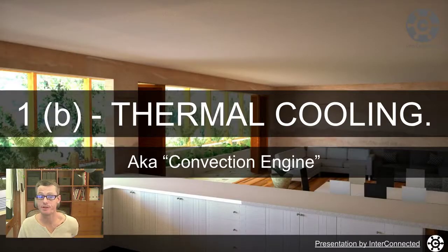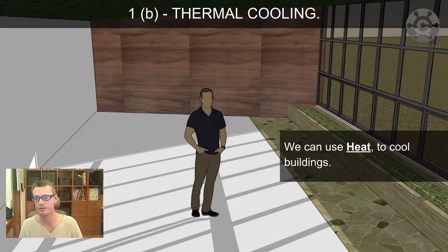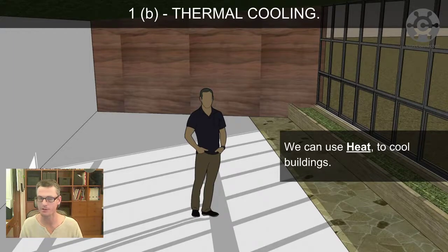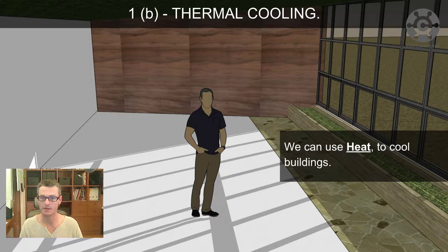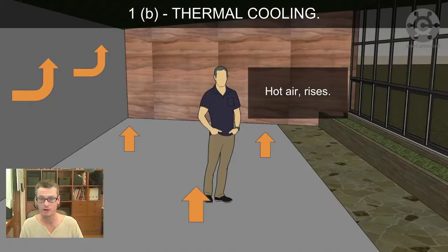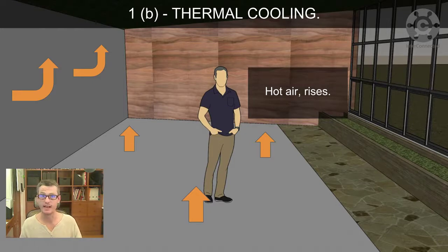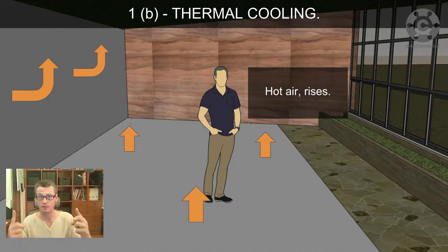And this is thermal cooling, so also known as a convection engine when you look through the Earthship books, Earthship literature, Earthship websites. They call it a convection engine here and there I think. So we can use heat to cool buildings. Hot air rises as we all know. Put energy into air and it will become less dense, it will expand. So hot air being less dense than cool air, the cool air will sink, the hot air will rise.